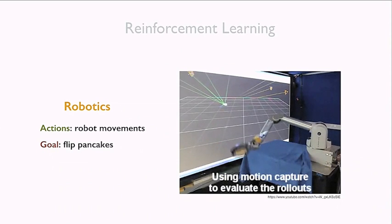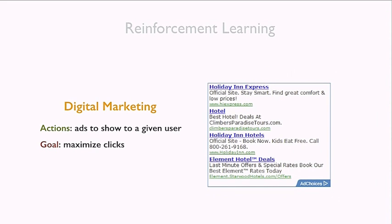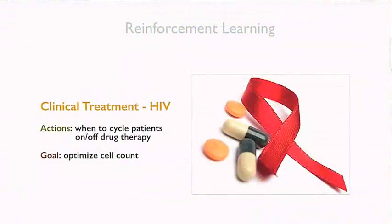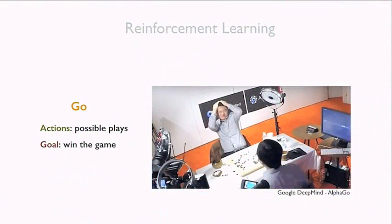More abstract RL applications include digital marketing, where actions are decisions about which ads to show a user; clinical treatment of HIV patients, where actions are decisions about when to cycle patients on and off drug therapy to maximize cell counts; and most famously, DeepMind's result combining reinforcement learning with neural nets to beat one of the best players of Go — the ancient Chinese game that everybody thought was decades beyond AI.